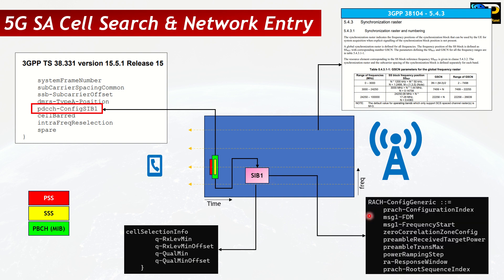SIB1 also provides the RACH configuration. In NSA, the RACH configuration is given by the LTE anchor, but in standalone there is no LTE anchor. From SIB1 the UE gets the root sequence index and the zero correlation zone config, which gives the cyclic shift. Using these two parameters, the UE can generate a RACH preamble to initiate the random access procedure.